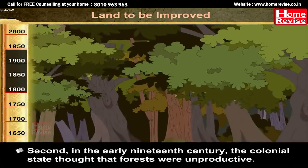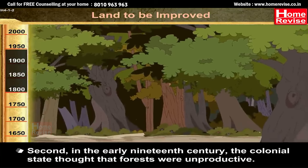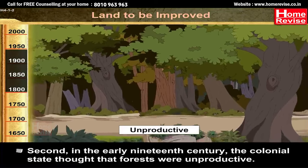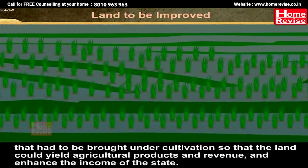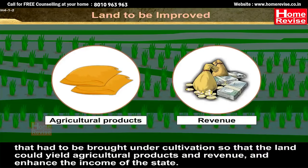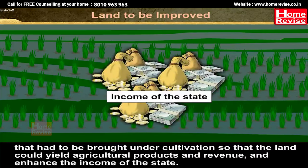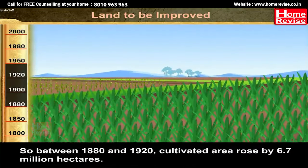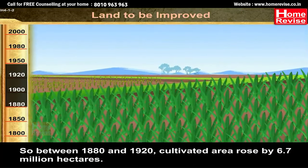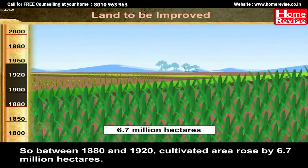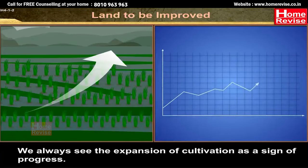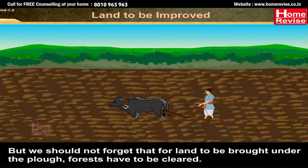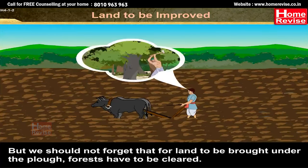Second, in the early 19th century, the colonial state thought that forests were unproductive. They were considered to be wilderness that had to be brought under cultivation so that the land could yield agricultural products and revenue and enhance the income of the state. So between 1880 and 1920, cultivated area rose by 6.7 million hectares. We always see the expansion of cultivation as a sign of progress, but we should not forget that for land to be brought under the plough, forests have to be cleared.